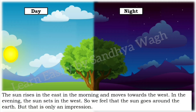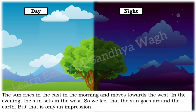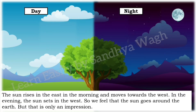The sun rises in the east in the morning and moves towards the west in the evening. The sun sets in the west. So, we feel that the sun goes around the earth. But that is only an impression. Actually, the sun stays in its place, and it is our earth that spins around itself — and that is why we have day and night on earth.